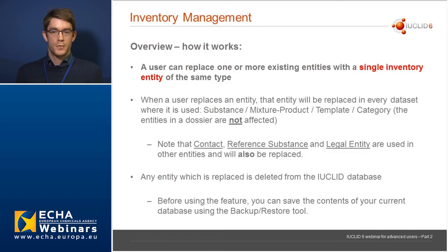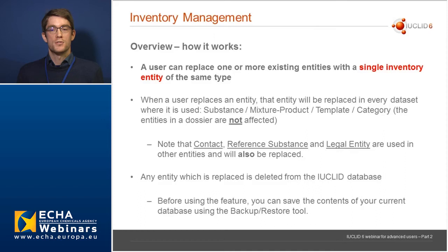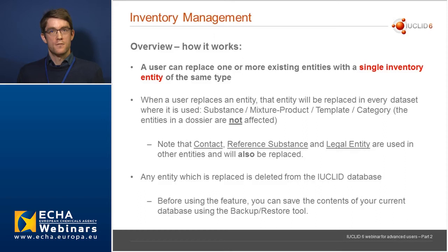Note that three entities — contact, reference substance, and legal entity — are used in other entities and will also be replaced. So for instance, if I replace a contact, that will also be replaced in legal entity if it's linked there. Any entity which is replaced is deleted from the IUCLID database. It's recommended that you use the backup restore feature of IUCLID to make sure you've saved any data that could go missing.